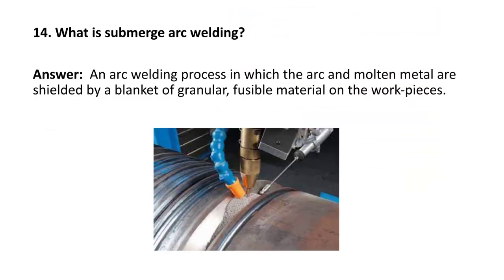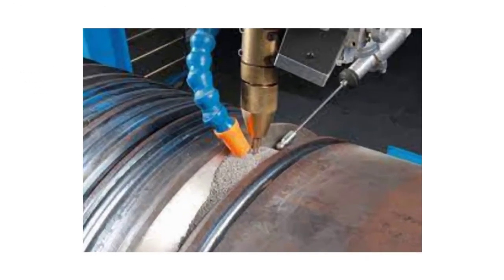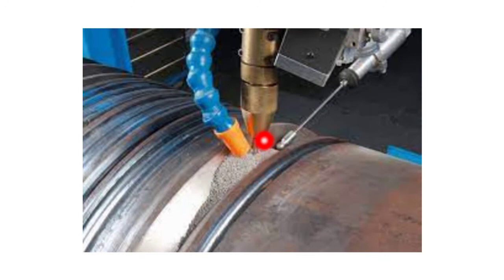Next question: what is submerged arc welding? It is an arc welding process in which the arc and the molten metal are shielded by a blanket of granular fusible material on the workpiece. The arc is generated between the electrode and the workpiece, and that arc is completely surrounded by flux which is in the form of granules.